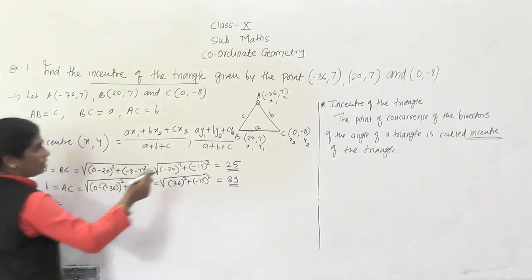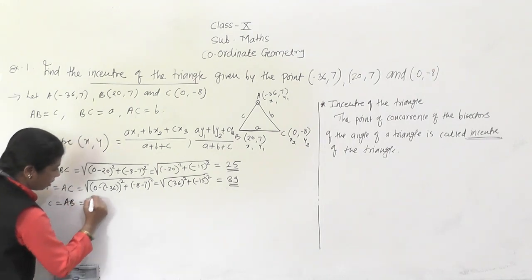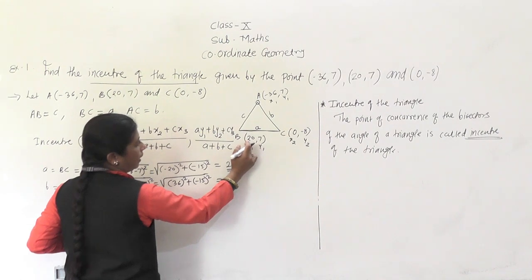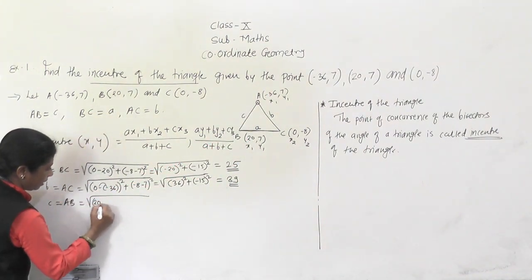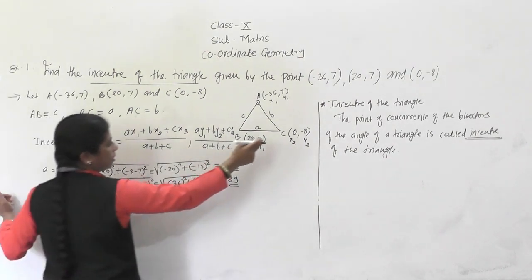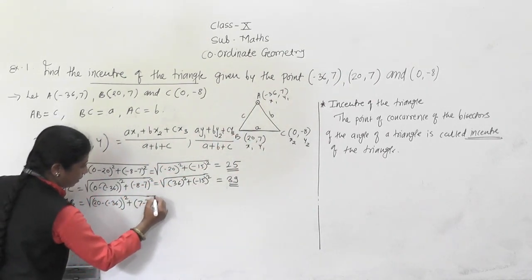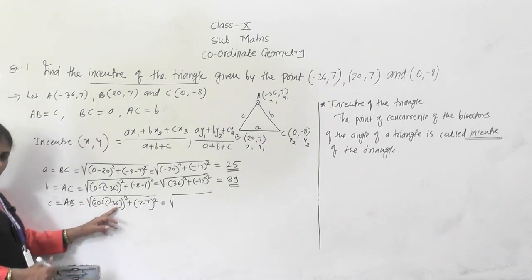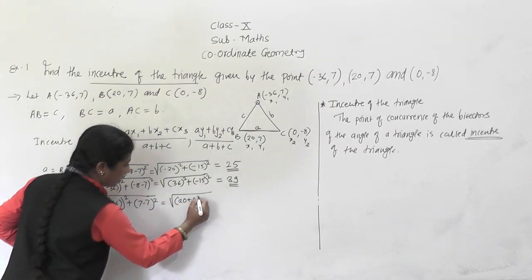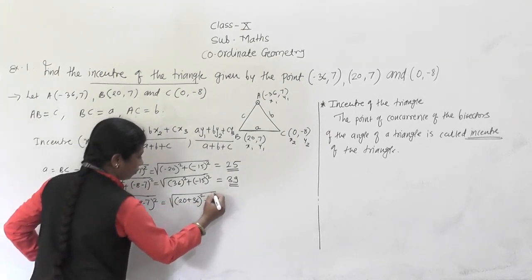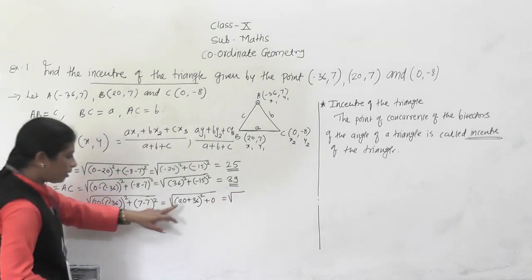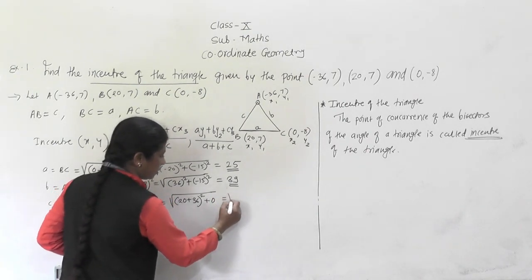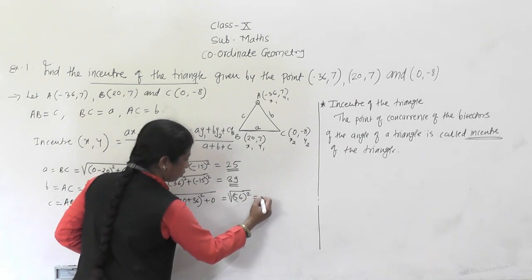Then c = AB. AB = √[(20 − (−36))² + (7 − 7)²] = √[(20 + 36)² + 0²] = √[56²] = 56.